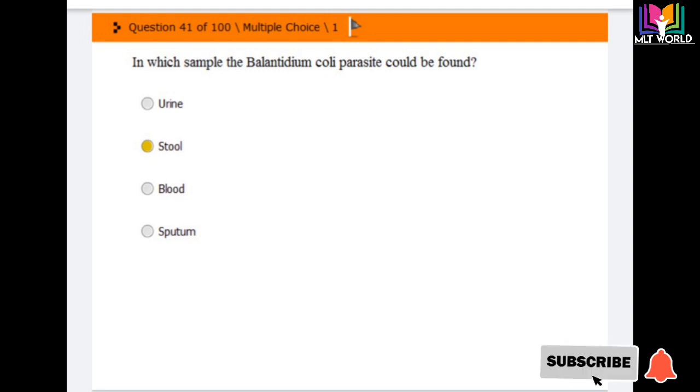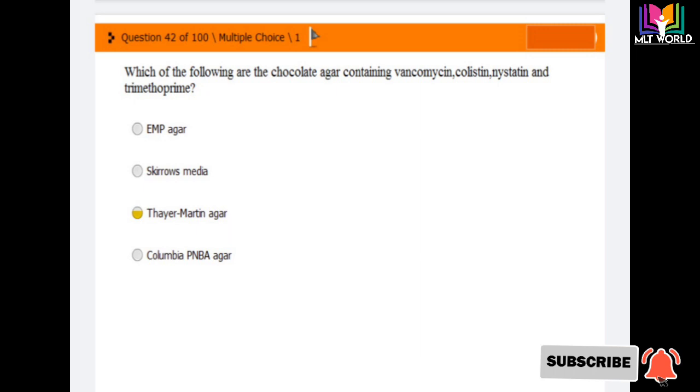Question number 41: In which sample can the Balantidium coli parasite be found? Options are urine, stool, blood, sputum. The answer is option 2, stool. Balantidium coli parasite can be found in stool.